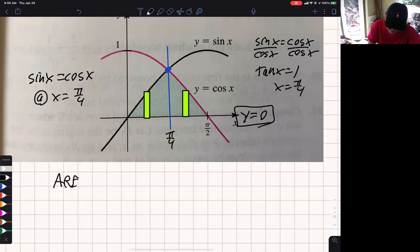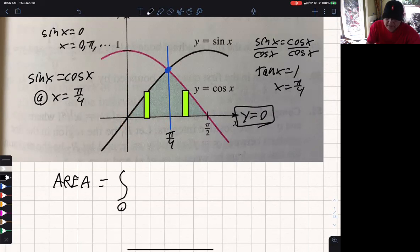And how do I find my area? I have to add all the rectangles. How do you add? You integrate, starting at 0. And again, that's not given. So technically on this one, you'd have to say, hey, when is sin x equals 0? And you should know 0 pi dot dot dot. Therefore, you know that's 0.